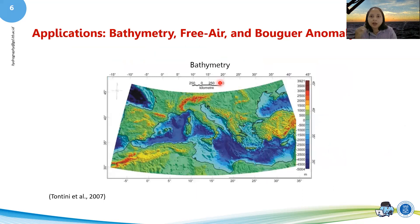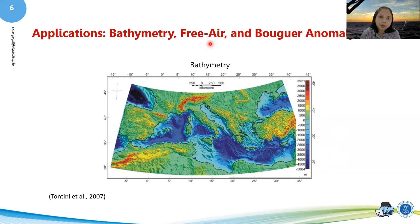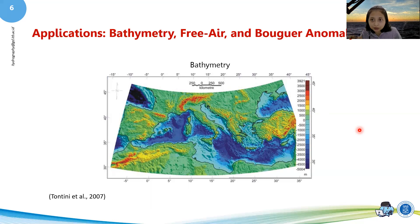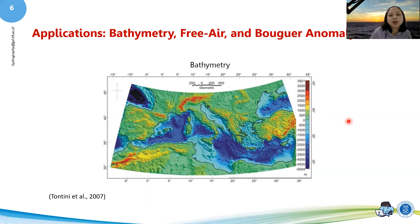After understanding these principles, we look at the use of the free air anomaly. There are two types of anomaly we'll discuss: free air anomaly and Bouguer anomaly. Before discussing those, we need to talk about bathymetry. When doing a gravity survey, you must also collect a bathymetry survey — otherwise your data would be useless. You need bathymetry together with gravity data.